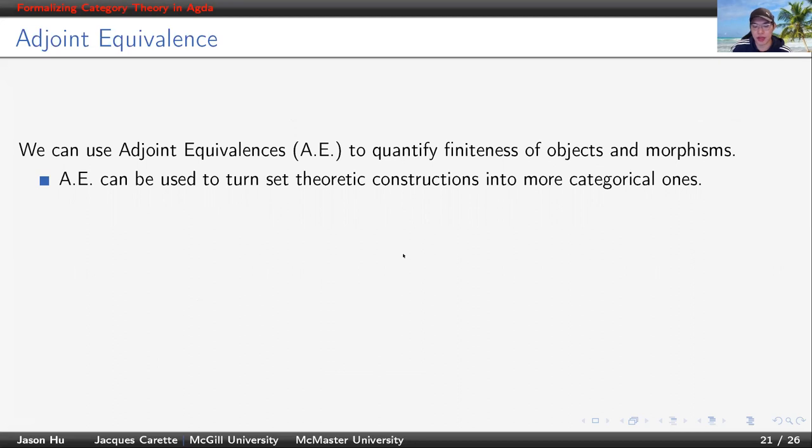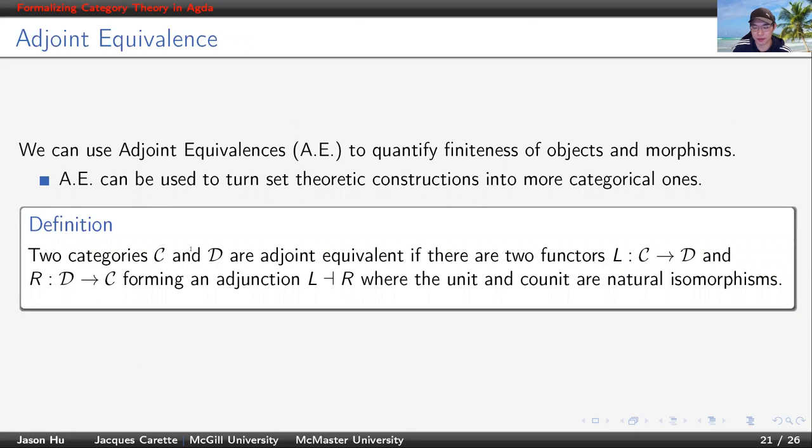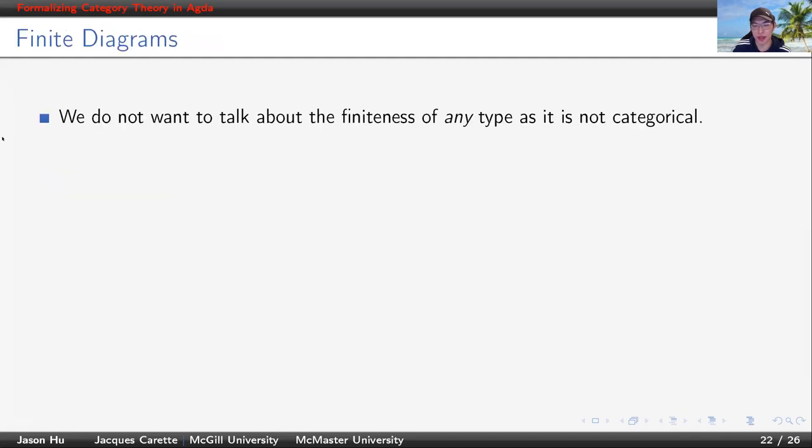To avoid using set-theoretic language directly, we use adjoint equivalence as an intermediate layer. We even think that adjoint equivalence works for other set-theoretic quantifications. To give the definition precisely, an adjoint equivalence is just an adjunction where the unit and counit are natural isomorphisms. The observation here is that we just don't want to talk about the finiteness of any type, but if we know precisely what type we're working with, then it's okay.